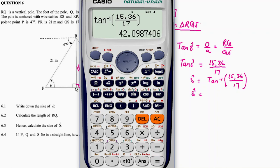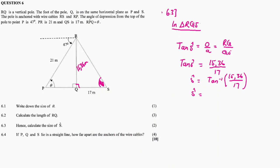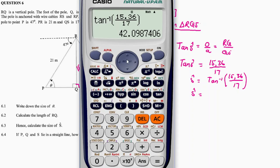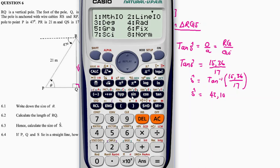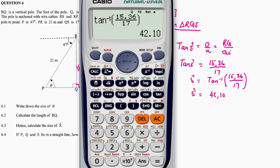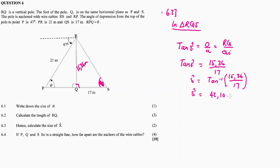So, arctan of 15.36 divided by 17. In two decimal places, this is equal to 42.10 degrees. That is the size of angle S.